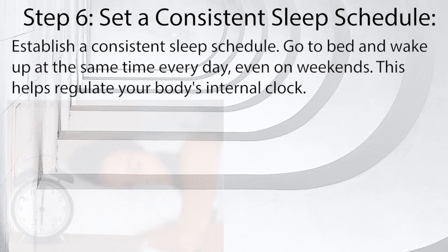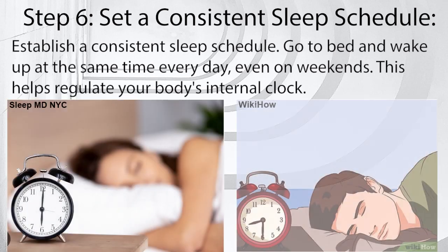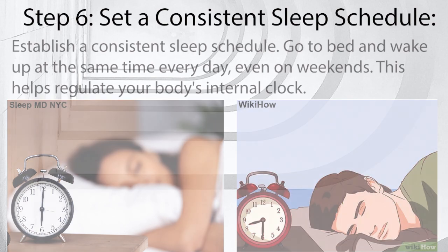Step 6: Set a Consistent Sleep Schedule. Establish a consistent sleep schedule — go to bed and wake up at the same time every day, even on weekends. This helps regulate your body's internal clock.